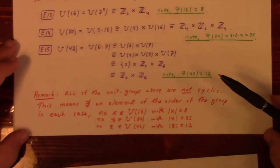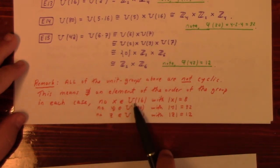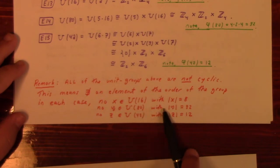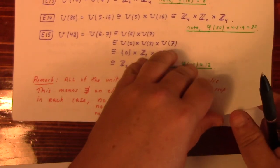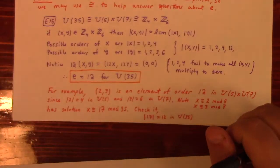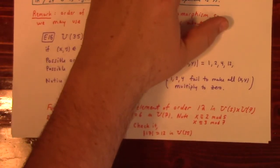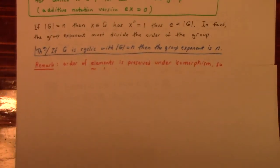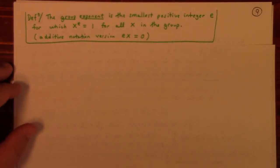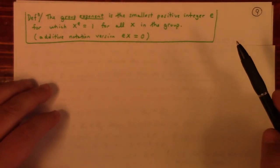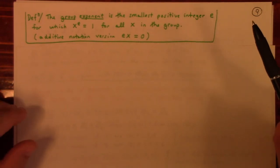All of the groups above — U_16, U_80, U_42 — are not cyclic. This means there does not exist an element of the order of the group: no x in U_16 with order 8, no y in U_80 with order 32, no z in U_42 with order 12. The easy way to prove non-cyclicity is to exhibit two distinct elements of order 2 — if a group has two elements of order 2, it cannot be cyclic.